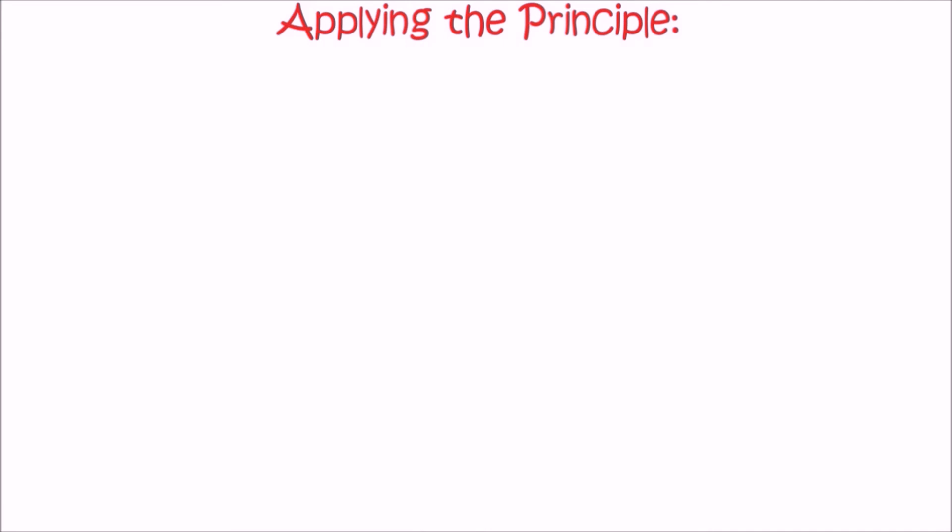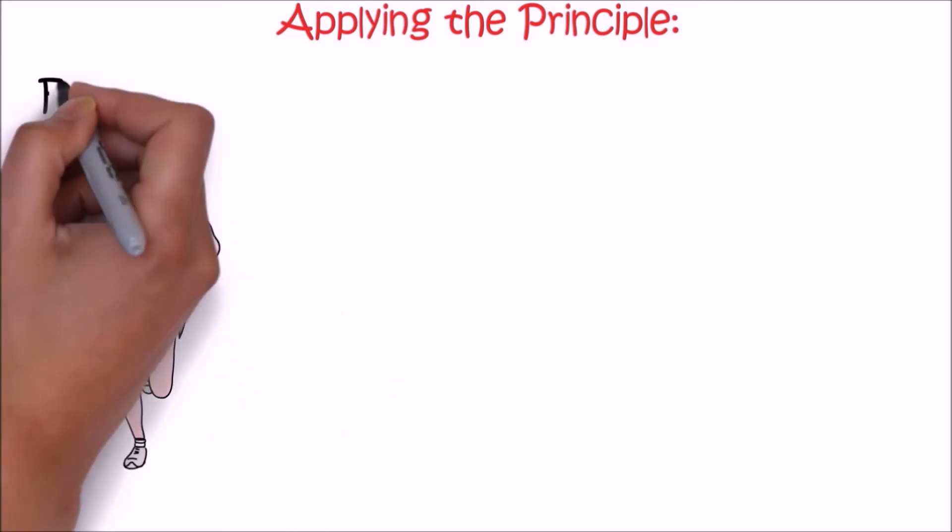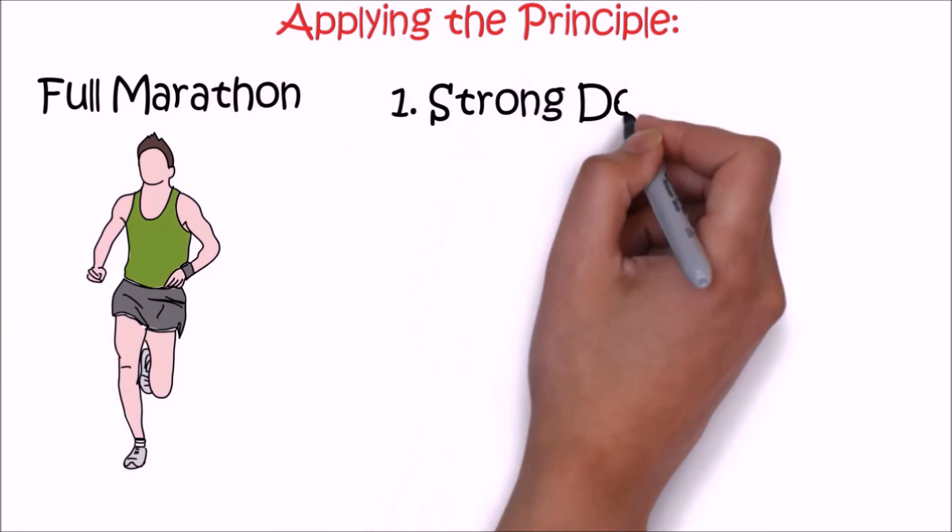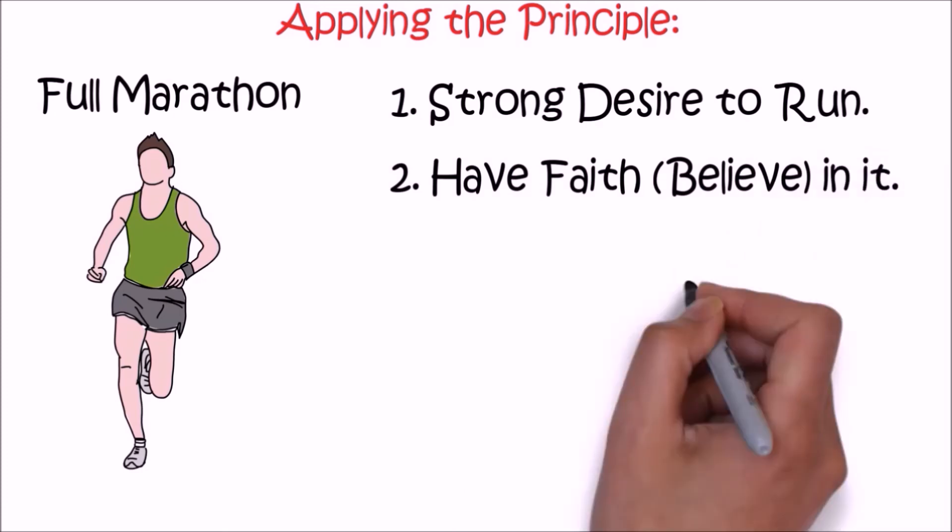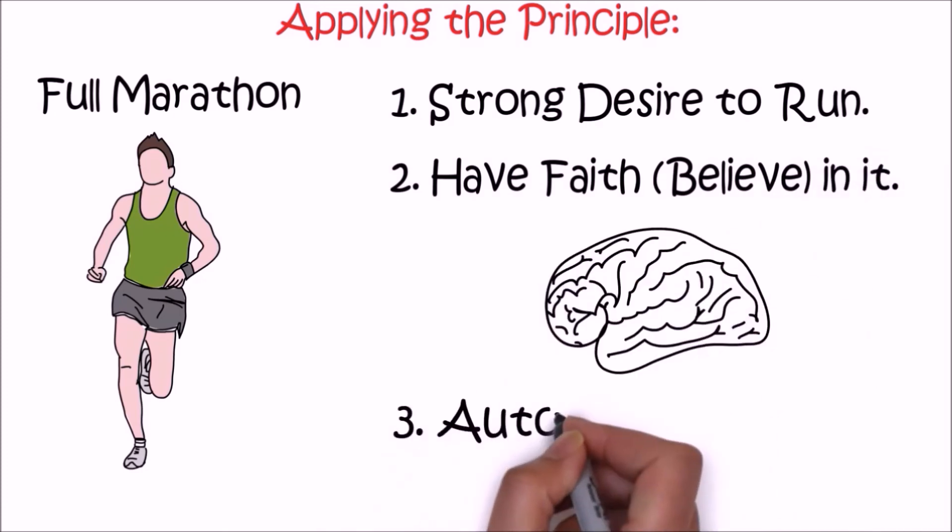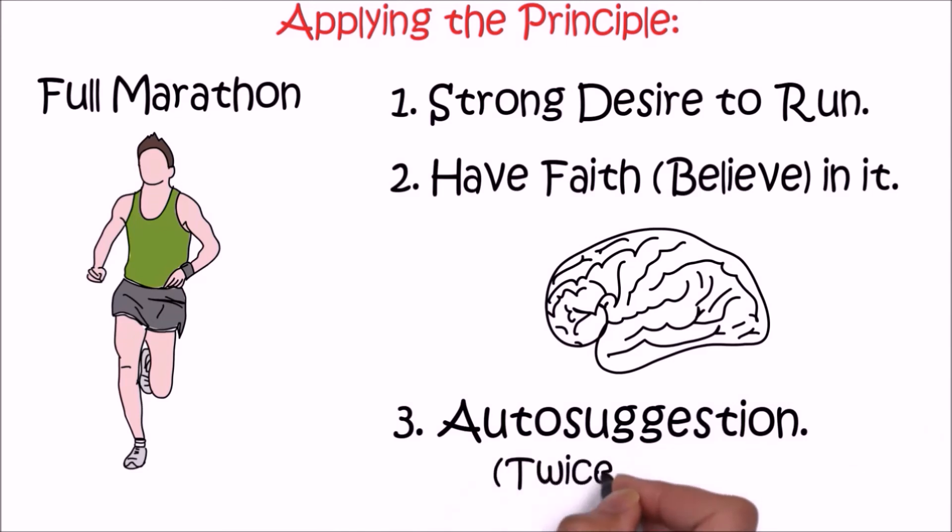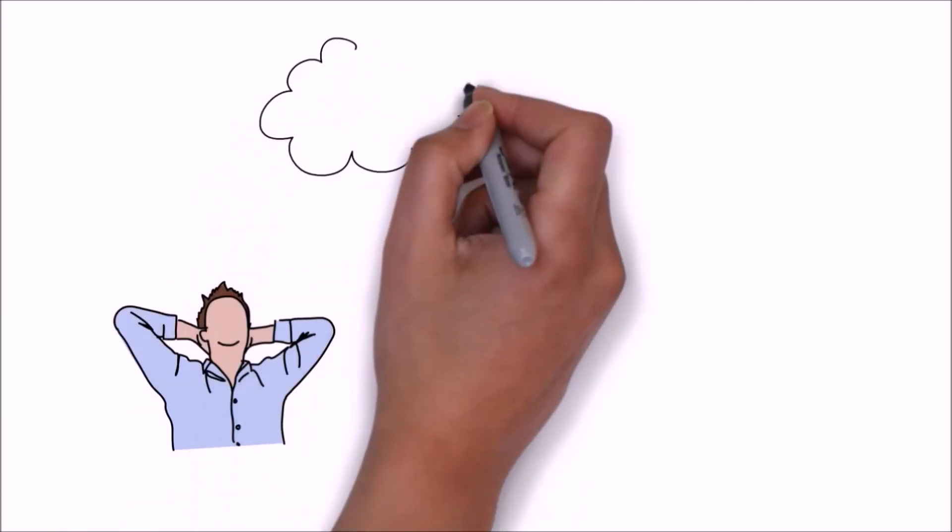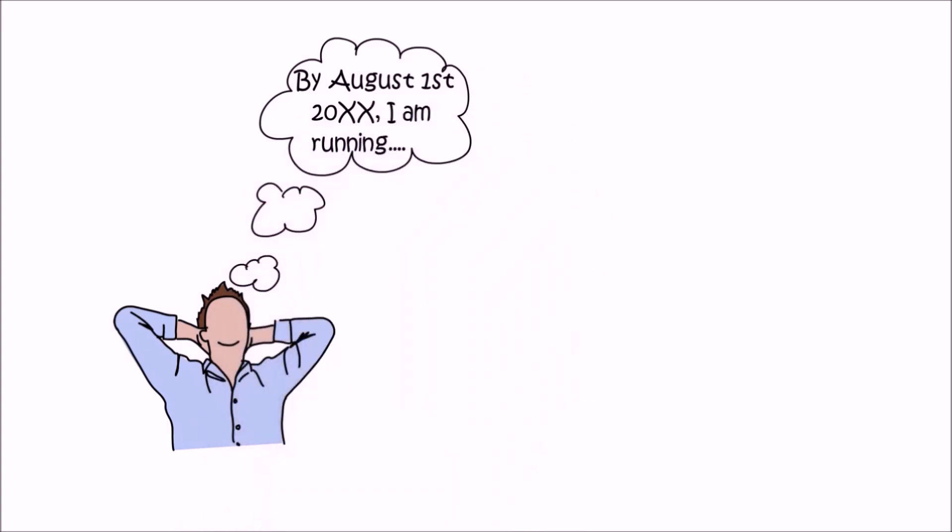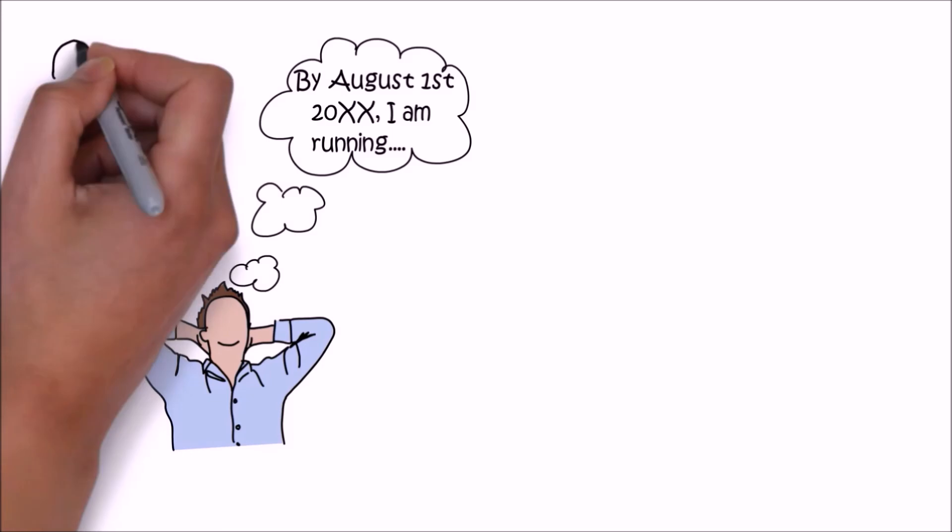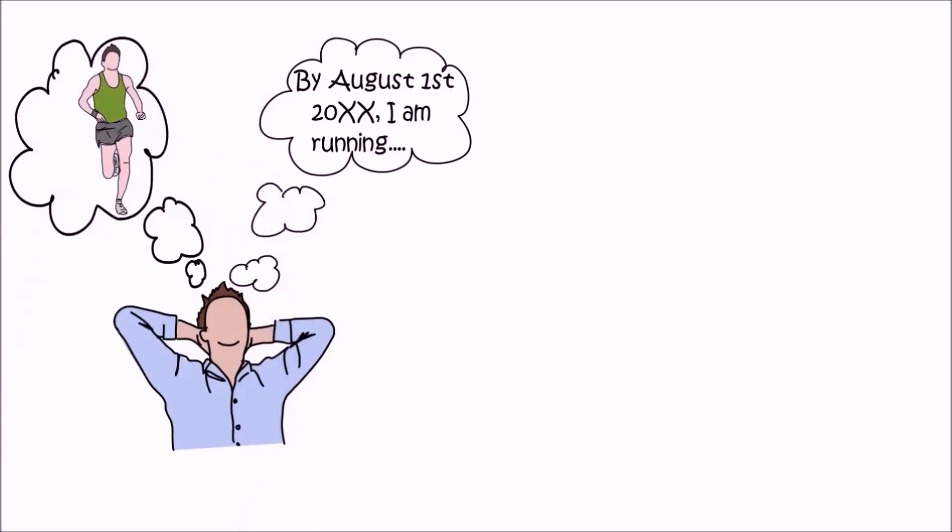Now let's look at how you can apply the principles mentioned in the book. So you want to run a full marathon but you don't have the experience of running. First of all, you need to have desire, a strong desire to run a full marathon. Then you've got to believe that you can make it happen - that's where faith comes into play. In order to strengthen your faith, you can use auto-suggestion. You have to describe to yourself when you want to achieve your goal, what good it brings to your life, and what you are going to give in return. Like, by August 1st of 20-something, I am running a full marathon. I have become more healthy, slim, strong, and for that I have run every single day.